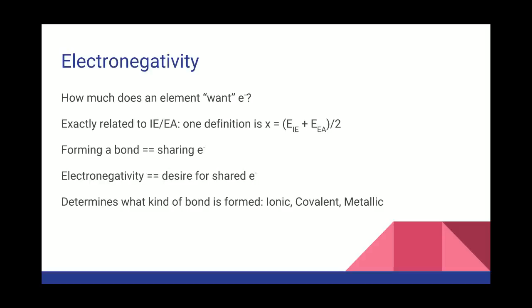So electronegativity follows ionization energy and electron affinity. It's for the exact same reason. Ionization energy is how much energy you have to put in to take an electron away. Electron affinity is how much energy you get out when you add an electron. In fact, one definition of electronegativity, the way you actually calculate it, is the average of electron affinity and ionization energy. That's what this formula here is telling us.